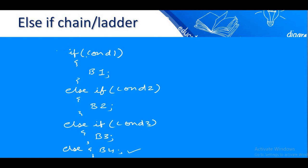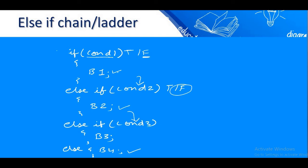How does it work? First, condition 1 is evaluated. If true, block 1 executes and the rest of the construct is ignored. If false, condition 2 is checked. If condition 2 is true, block 2 executes and the rest is skipped. In the else-if ladder, each condition is tested from top to bottom one by one, and as soon as a condition is found true, its associated block executes and all remaining statements are skipped.